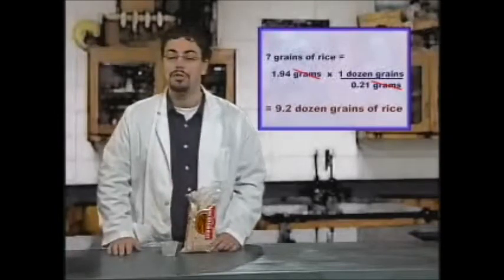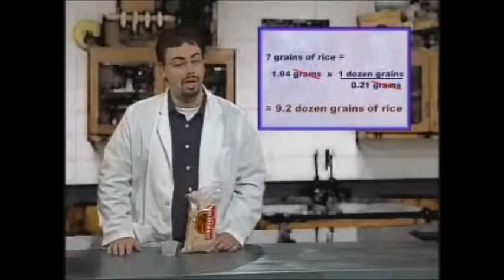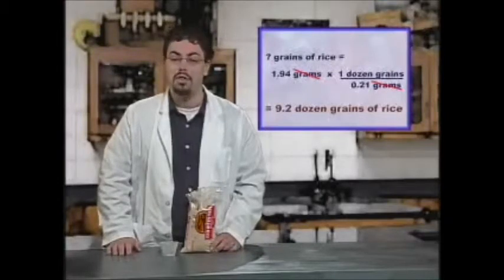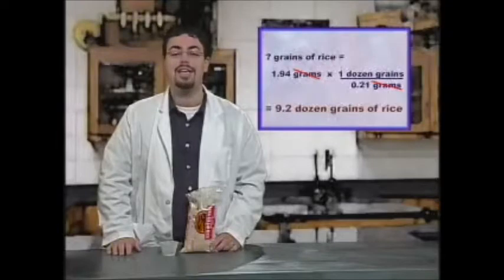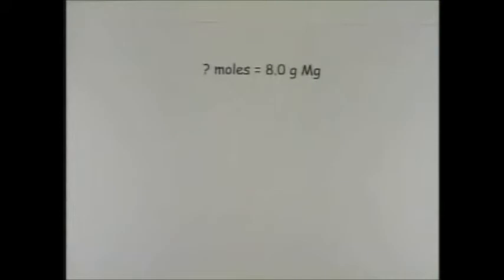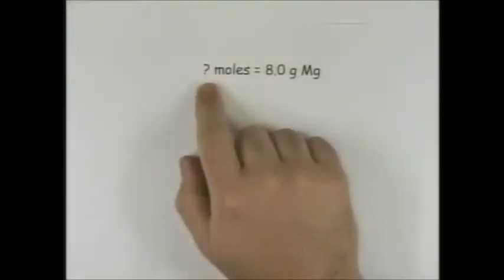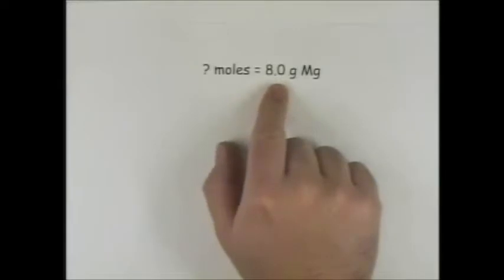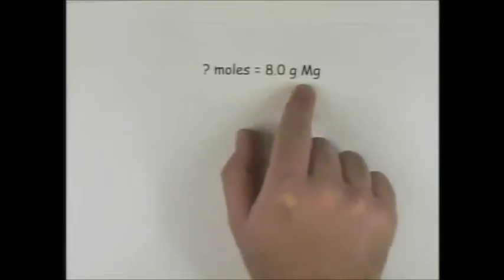The best way to learn this is to jump right in and solve a problem. Let's count the number of moles of atoms in 8.0 grams of magnesium. First of all, think way back to unit 1. We start all conversion problems with a question mark. In this case, we will say: how many moles equals 8.0 grams of magnesium?